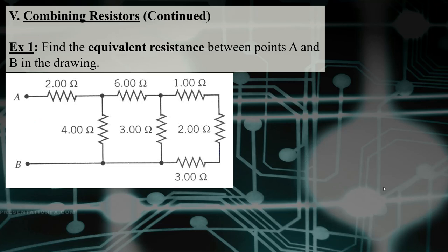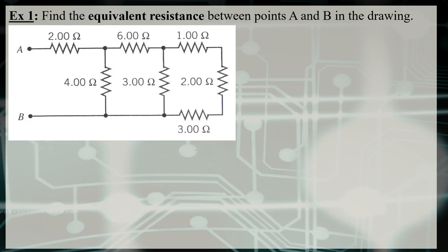For the first example, I have a circuit with a lot of resistors. What I want to do is combine all those resistors so that I only have a single resistor, which we'll call the equivalent resistance between points A and B in the circuit. Points A and B could be connected to a battery, but the important part here is just how we can break the circuit down.